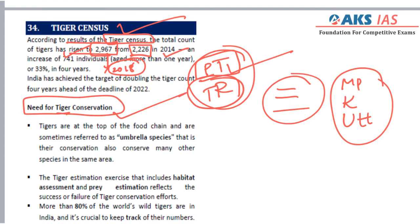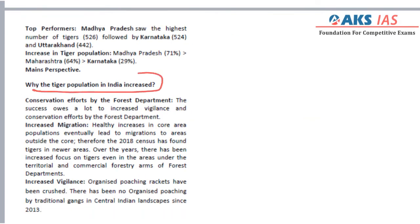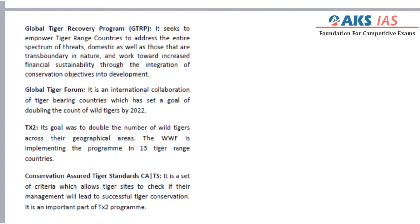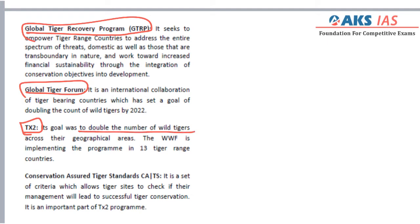The reasons for the increase in tiger population are given in the material, including continuous efforts by the Department of Environment and Project Tiger, M-STrIPES, global initiatives like the Global Tiger Initiative, Global Tiger Forum, Global Tiger Recovery Program, and Program TX2, which has the goal of doubling the number of tigers. India has the most tigers in the world, with more than 70 percent of the world tiger population.